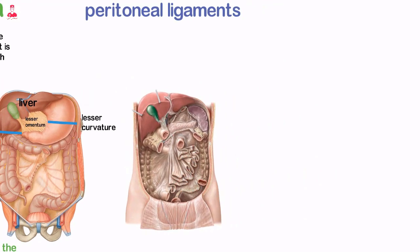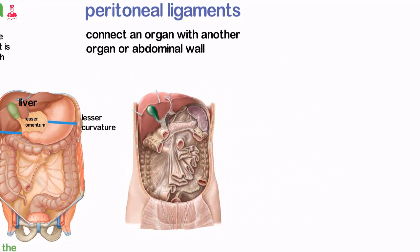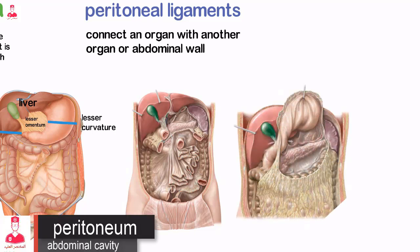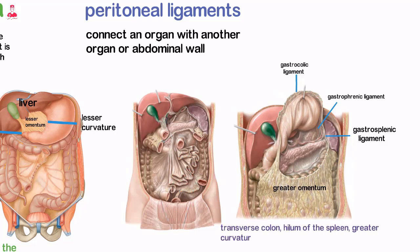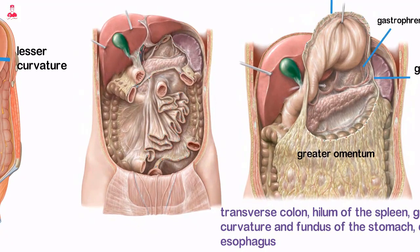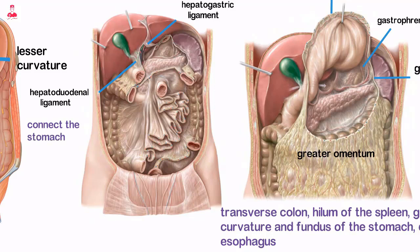Numerous peritoneal ligaments serve to connect an organ with another organ or the abdominal wall. These peritoneal ligaments are not ligaments in the classic sense, but are distinct regions of mesentery connecting the structures for which they are named. Three regions of the greater omentum characterized as peritoneal ligaments are the gastrocolic, gastrosplenic, and gastrophrenic. These ligaments attach the greater omentum to the transverse colon, hilum of the spleen, greater curvature and fundus of the stomach, diaphragm, and esophagus. Ligaments of the lesser omentum include the hepatogastric and hepatoduodenal, which serve to connect the stomach and duodenum to the liver.